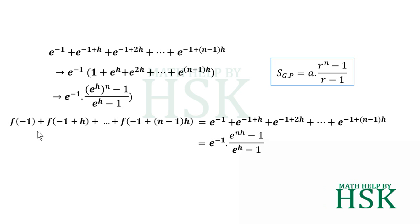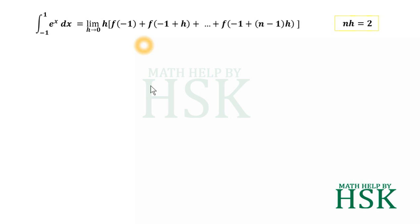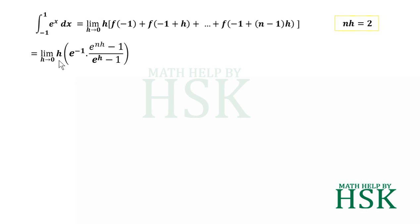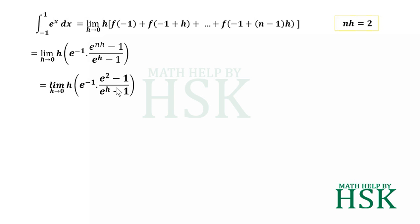I can write that the sum f of minus 1 plus f of minus 1 plus h, and so on up to f of minus 1 plus n minus 1 into h, is equal to e to the power of minus 1 into e to the power of n h minus 1, upon e to the power of h minus 1. Placing this value into the integral expression, I get: limit of h tends to 0, h times e to the power of minus 1, into e to the power of n h minus 1, upon e to the power of h minus 1. Since n h is equal to 2, I substitute that and get the limit of h tends to 0, h times e to the power of minus 1, into e squared minus 1, upon e to the power of h minus 1.